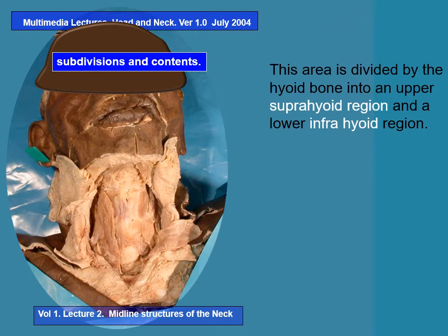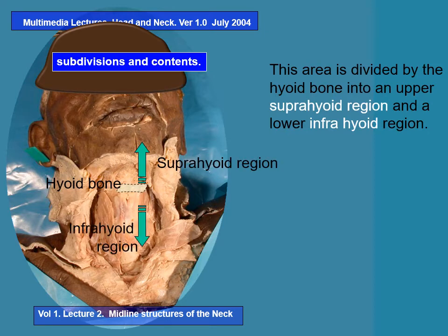Now subdivisions. The hyoid bone can be used as a landmark to divide this region into a supra-hyoid region and an infra-hyoid region. The region above the hyoid bone is the supra-hyoid area and the region below it is the infra-hyoid region. Therefore, the hyoid bone is an important landmark.